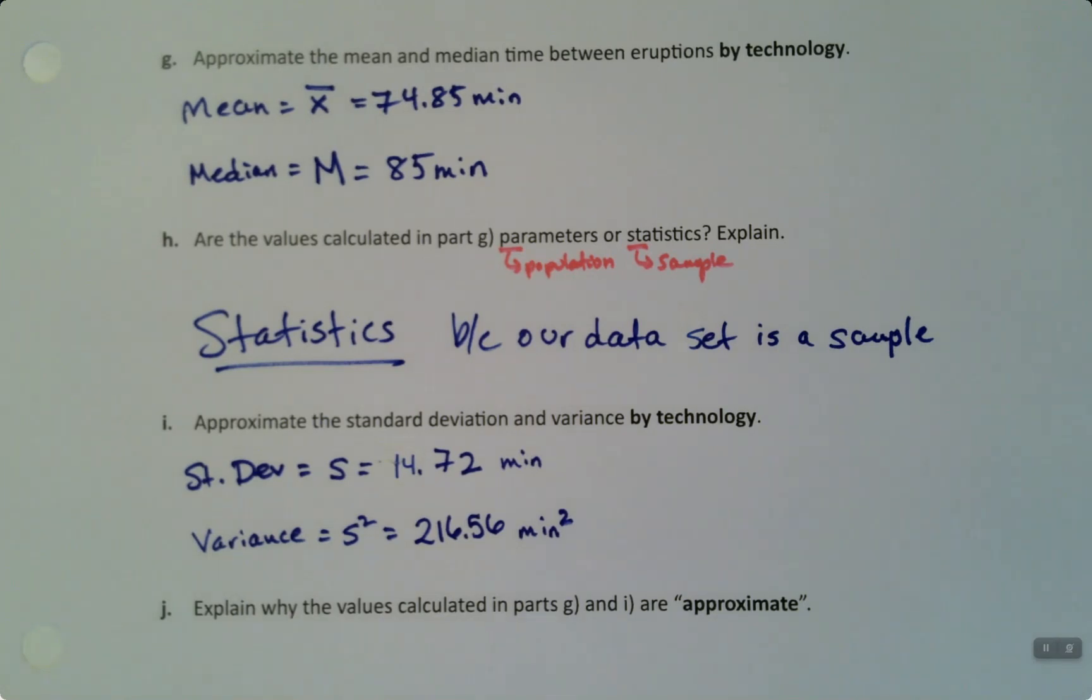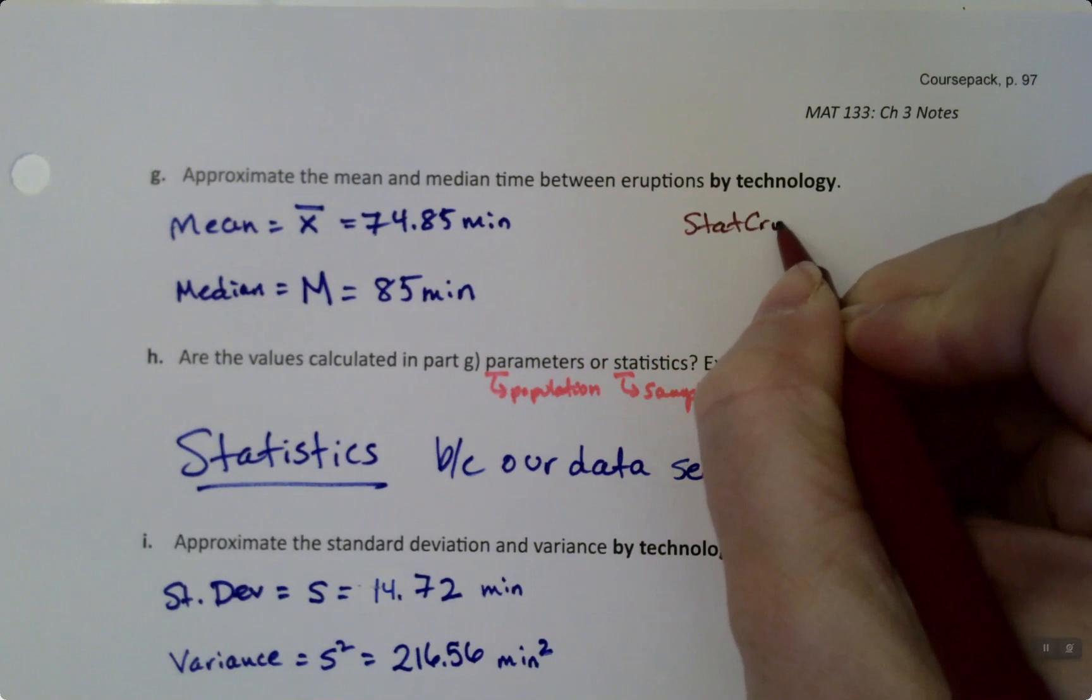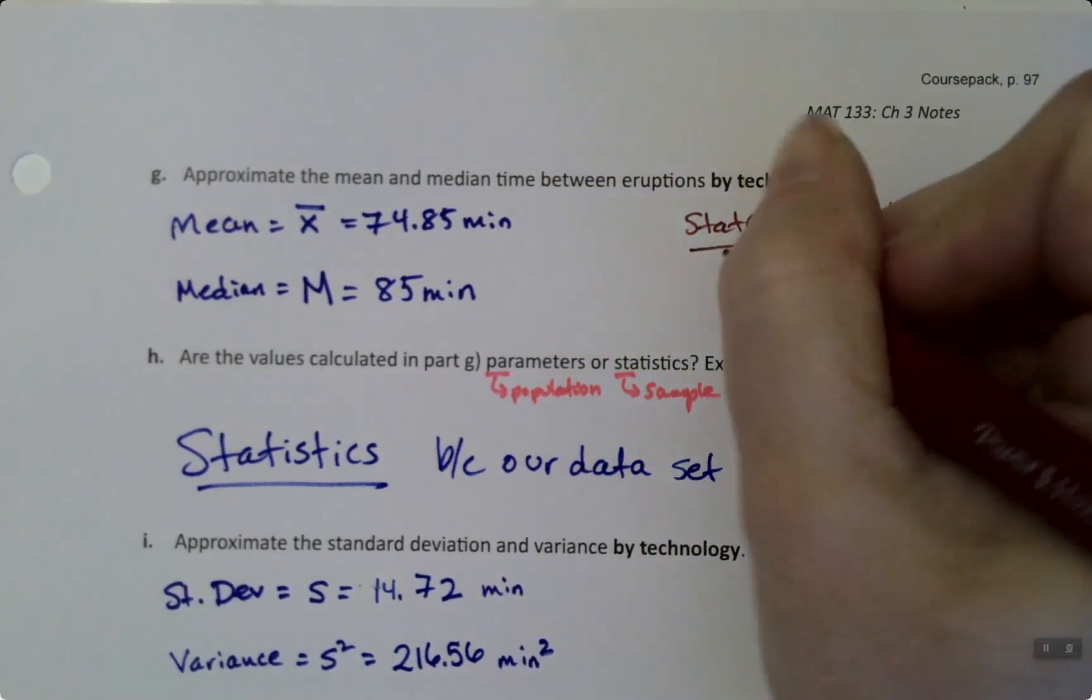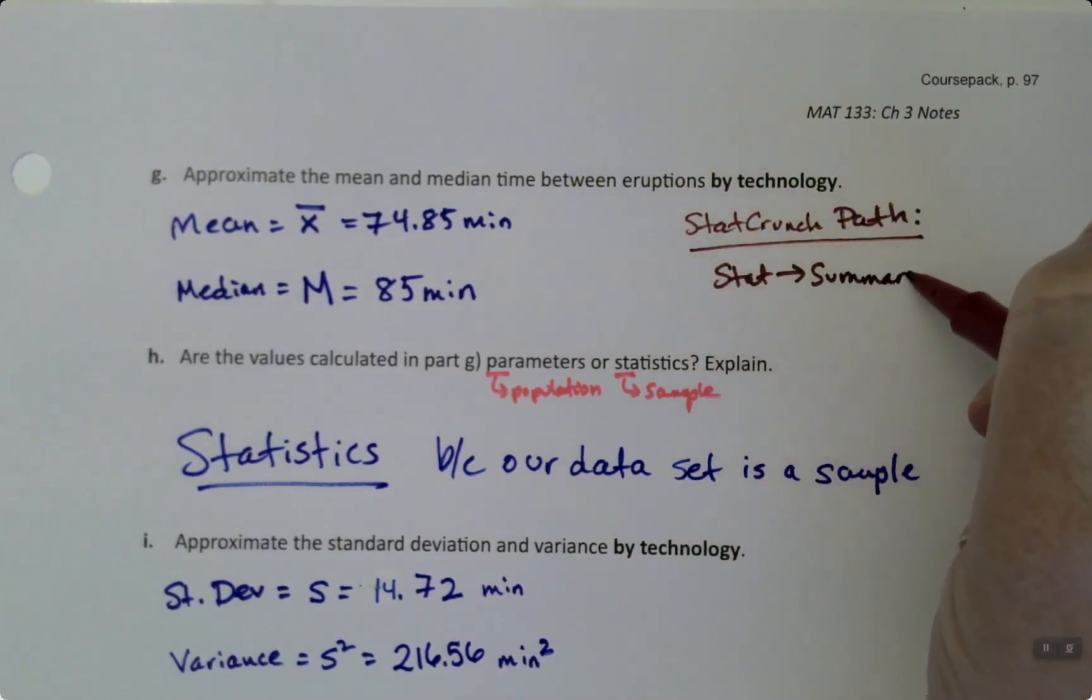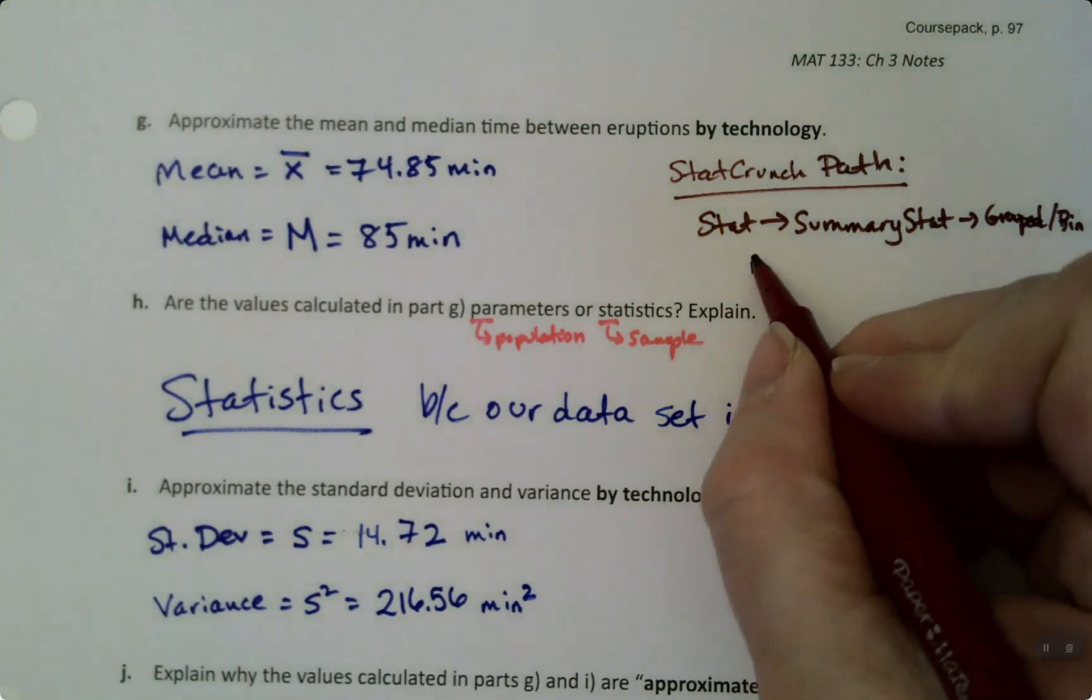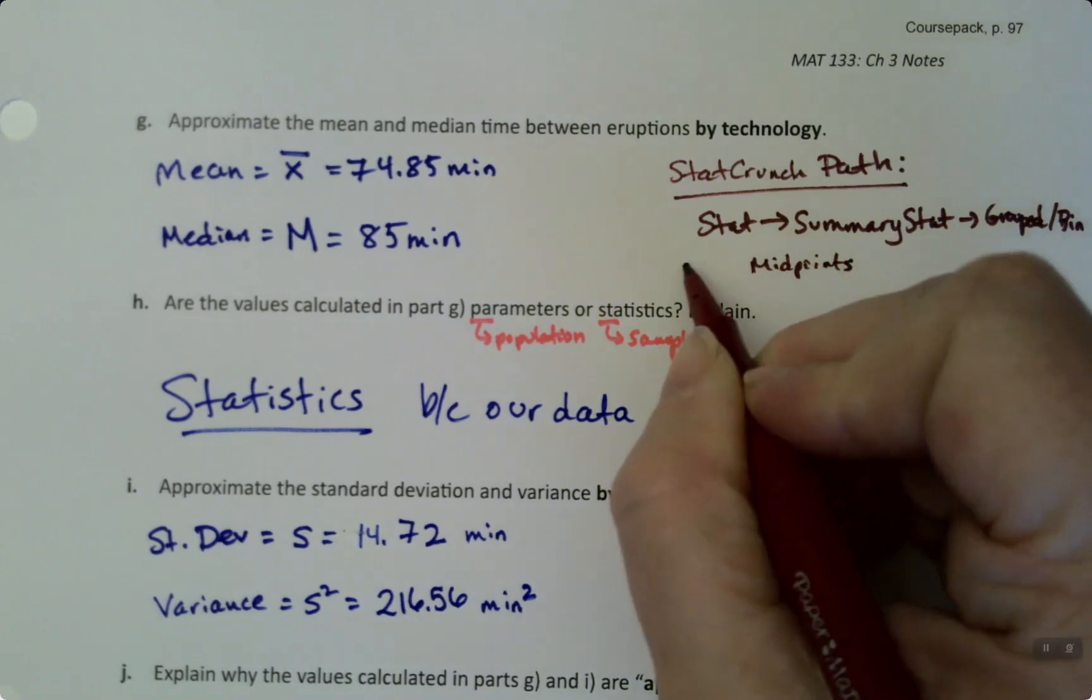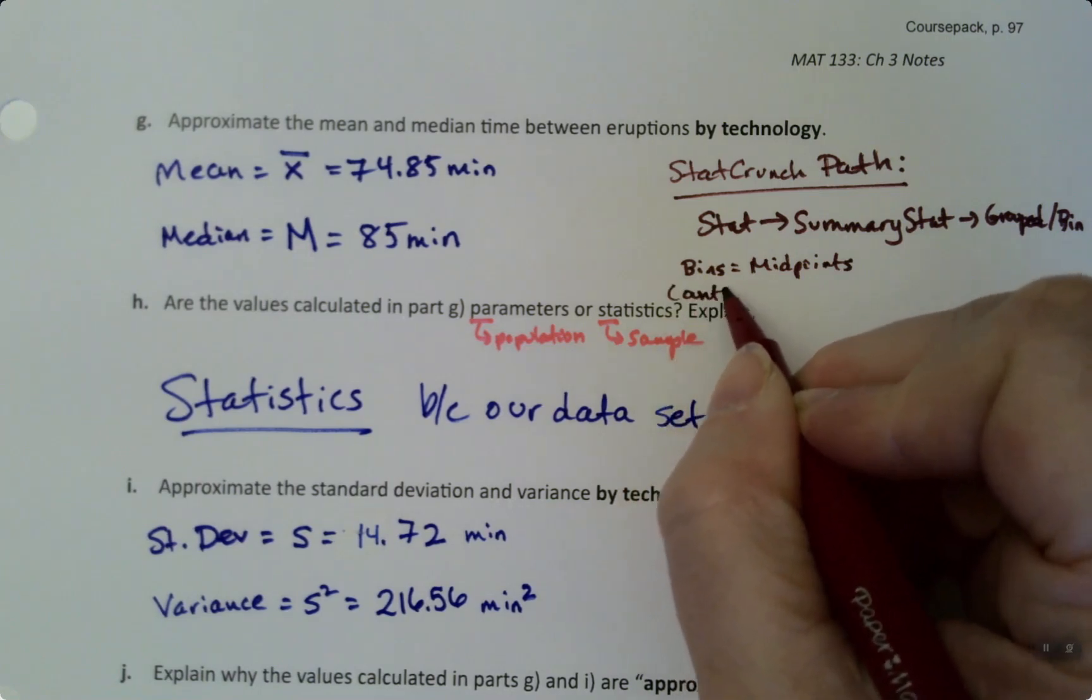Okay, so let's write down for ourselves our StatCrunch path because we need to remember our StatCrunch path for later. It's very important that we take the time in our notes to write this. So StatCrunch path would be stat, summary stat, grouped binned. And then the midpoints were the bins. So the bins, the midpoints, and the counts were the frequencies.